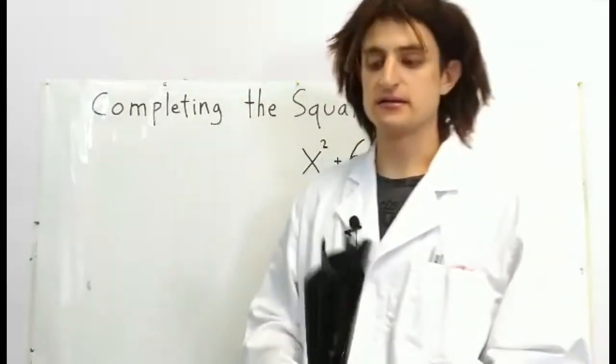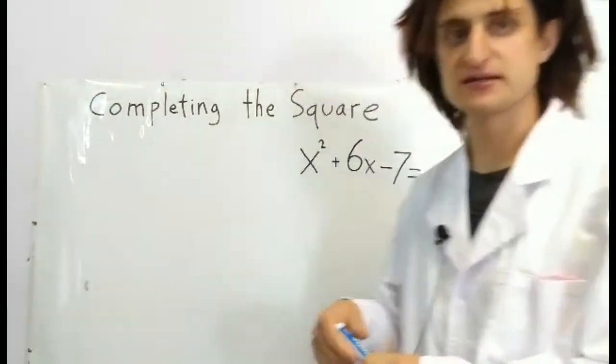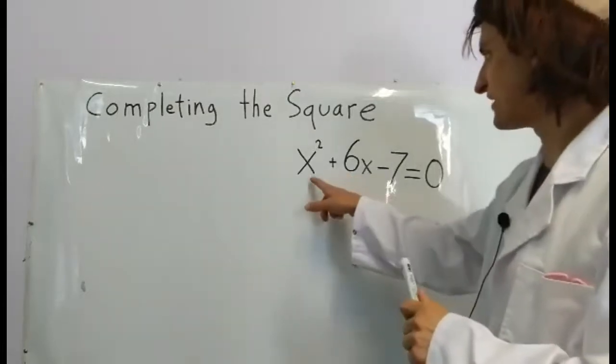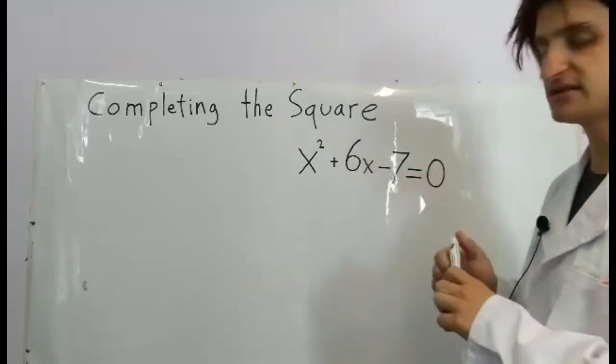Who's excited to solve a quadratic equation by completing the square? This is what we'll do. We have x² + 6x - 7 = 0.